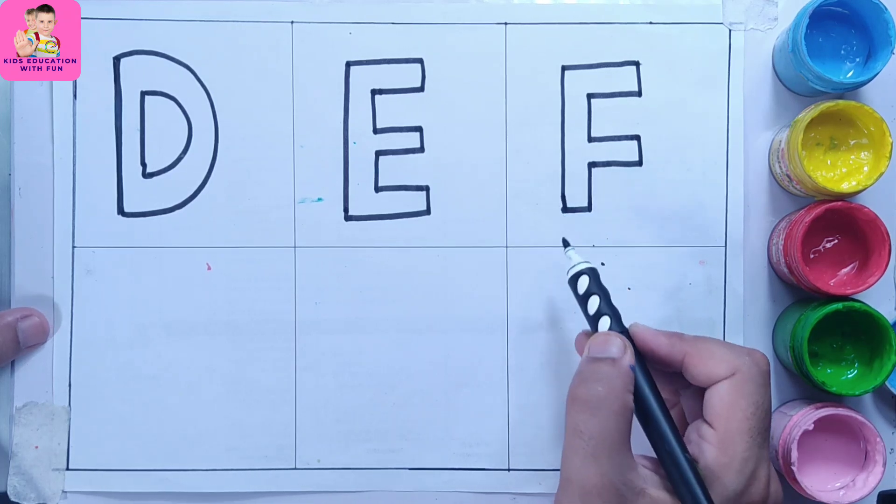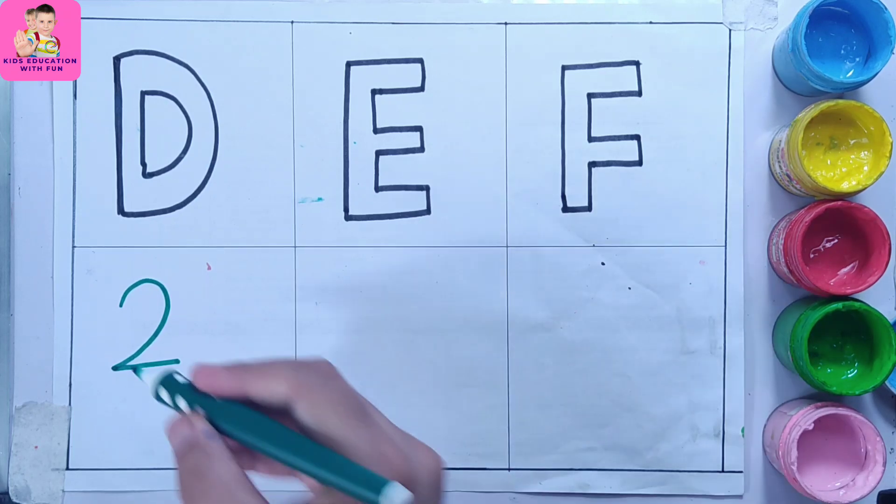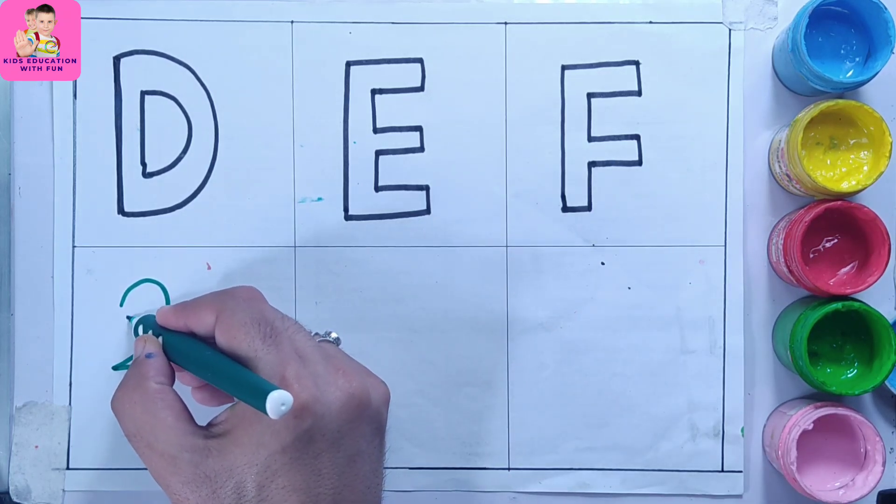So this is letter F. How will you draw a duck out of number two? So you have to follow me.